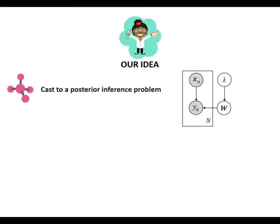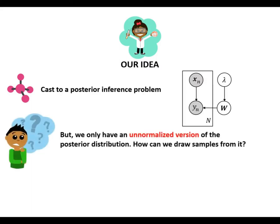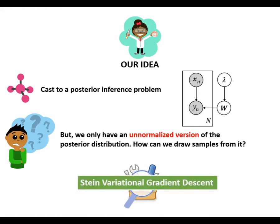Our idea is: first, we cast the optimization problem to a posterior inference. From that, we observe there exists a trivial solution to the posterior inference problem where a maximum a posteriori estimator is used. But one problem is we only have an unnormalized version of the posterior distribution, so how can we draw samples from it?